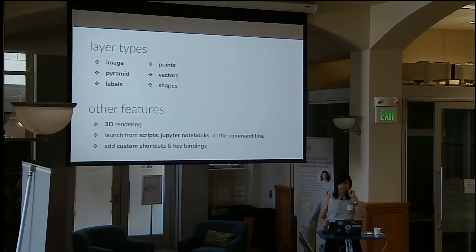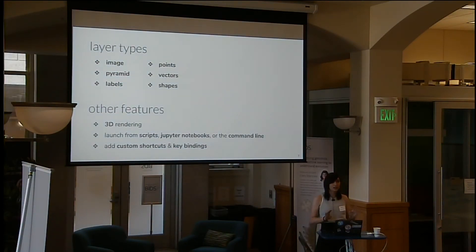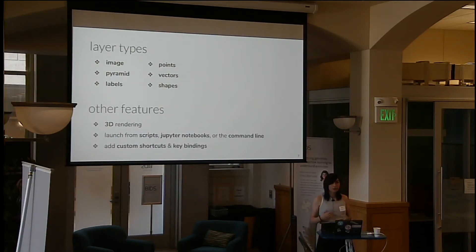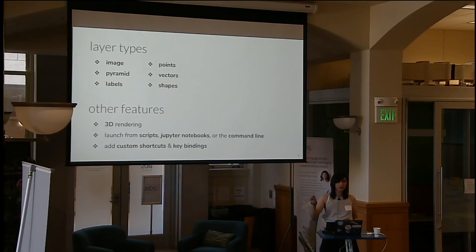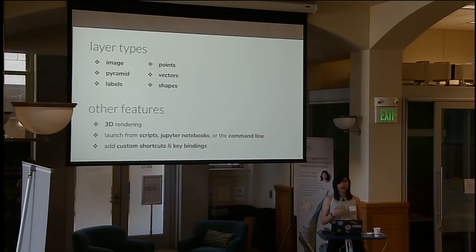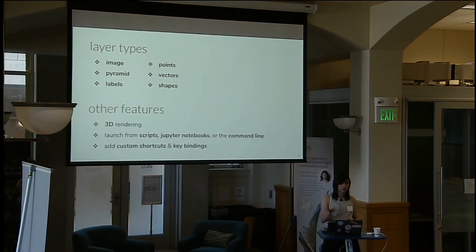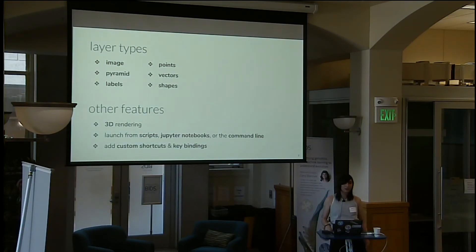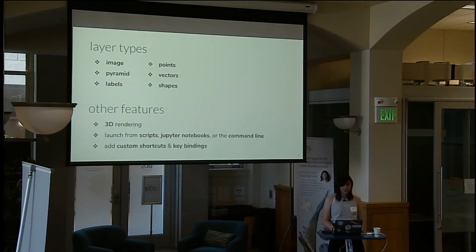We have six layer types at the moment. We have an image layer for any NumPy-like arrays, which includes Dask and Zarr. We have a pyramidal layer for multi-resolution images, a labels layer for annotating regions with a boolean mask or integer, a points layer for annotating points, a vectors layer if you want a lot of lines, and a shapes layer if you want to draw polygons and the like. Other cool features include 3D rendering, the ability to launch from scripts, Jupyter notebooks, or the command line, and the ability to add custom shortcuts and key bindings.